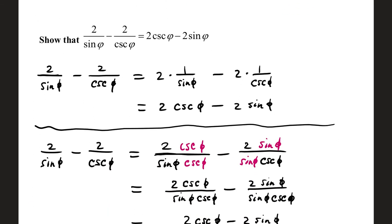Show that 2/sin(φ) - 2/csc(φ) = 2csc(φ) - 2sin(φ). Starting with the left side: 2/sin(φ) = 2·(1/sin(φ)) and 2/csc(φ) = 2·(1/csc(φ)). By reciprocal identities, 1/sin(φ) = csc(φ) and 1/csc(φ) = sin(φ), which leads directly to the destination: 2csc(φ) - 2sin(φ).